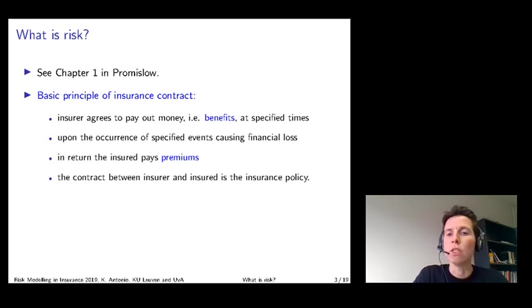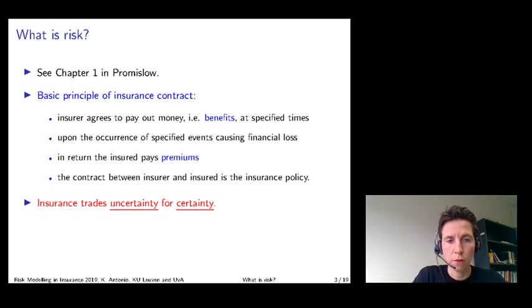The insurance device trades uncertainty for certainty. Uncertainty refers to the fact that at the start of the contract the policy holder does not know whether he or she will be involved in any event that will lead to a financial loss, and if involved, does not know how large this loss would be. However, by buying an insurance contract they know for sure how much the insurance fee or premium will cost.